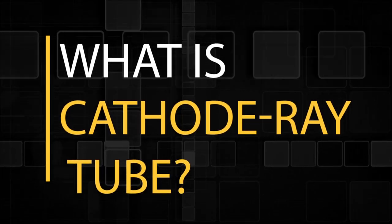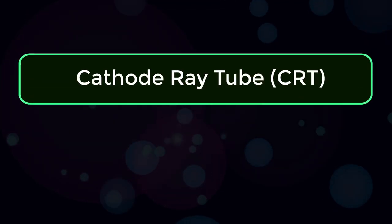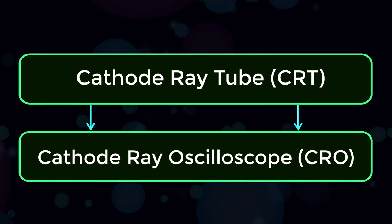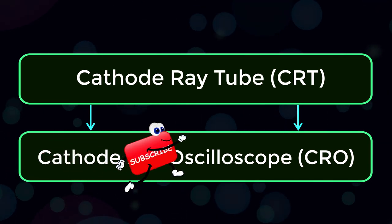What is cathode ray tube? The cathode ray tube, CRT, is the heart of the cathode ray oscilloscope, which is called CRO.